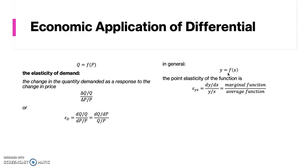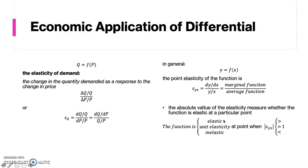For convention, the absolute value of the elasticity measure is used in deciding whether the function is elastic at a particular point. The function is elastic when the epsilon is greater than 1.